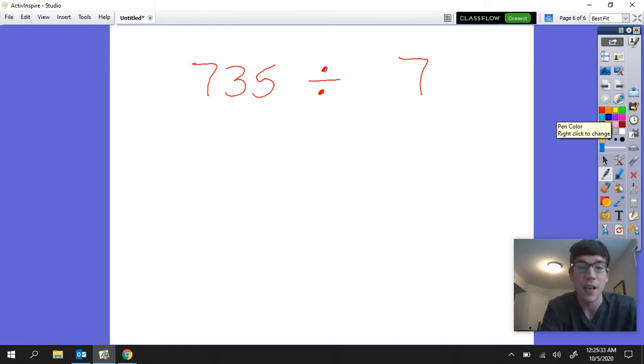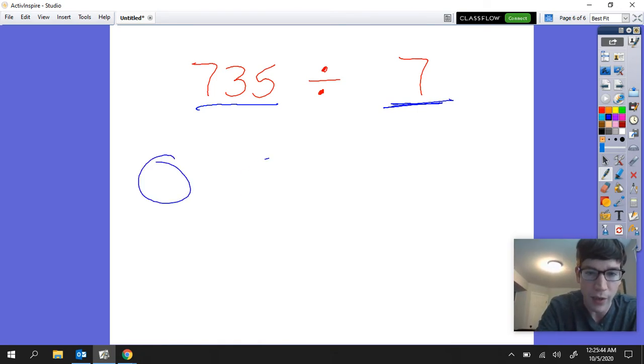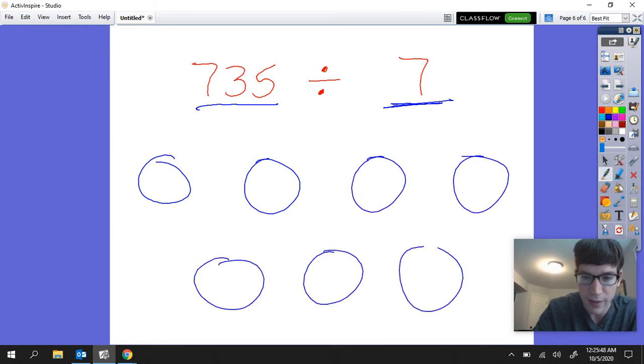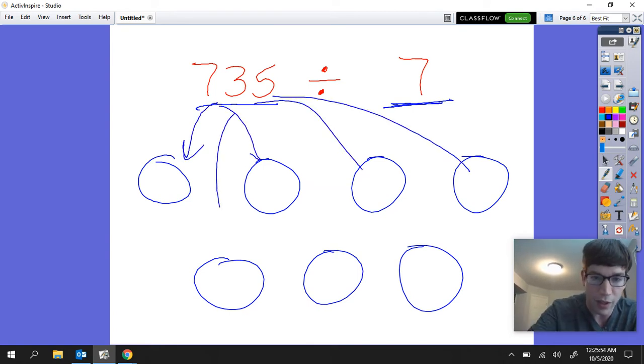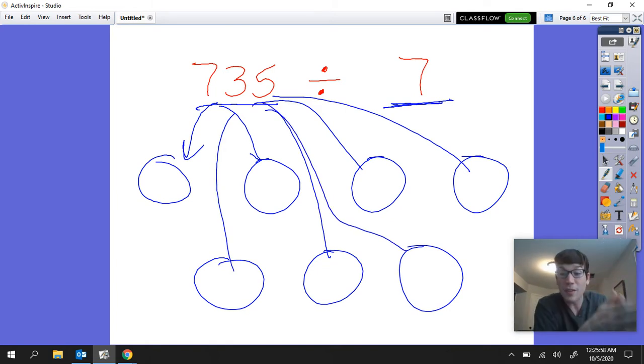Now when we're talking about division we're talking about splitting something up into pieces, so we're talking about taking this number 735 and we're talking about splitting it up into seven different groups. So one way you can kind of think about this is you can kind of think about seven groups, one, two, three, four, five, six, seven.